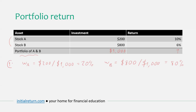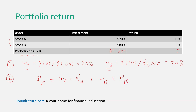That's step one done. The final step is to compute the portfolio return, which is simply a weighted average of the individual returns, where the weights are the investment weights we just computed. So the portfolio return Rp equals the weight of the first asset times its return, plus the weight of the second asset times its return. Putting in the numbers: 20% for stock A which yields 10%, and 80% for stock B which yields 6%.